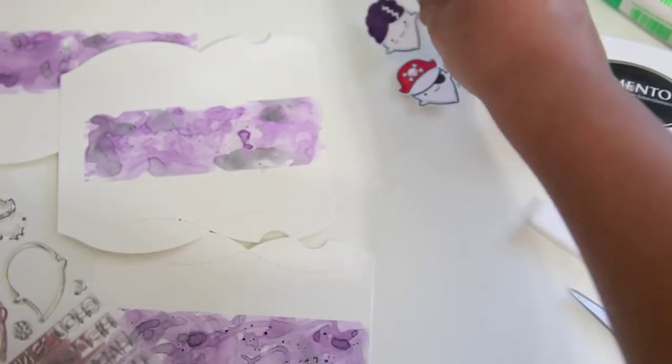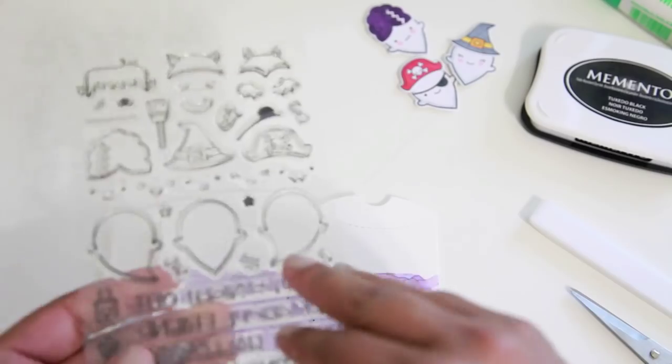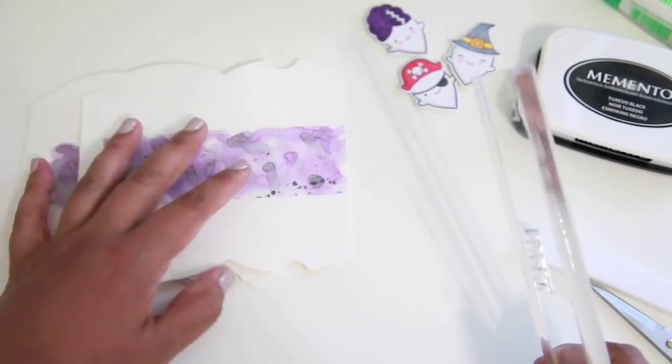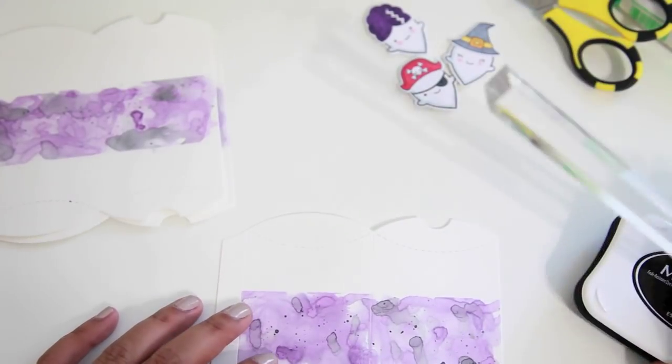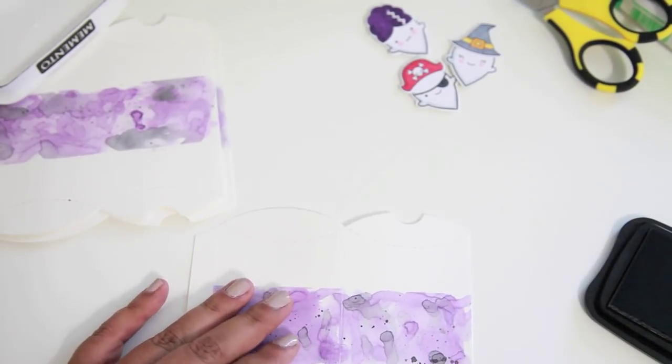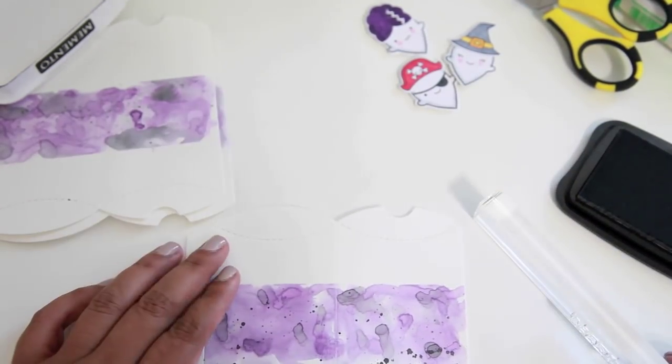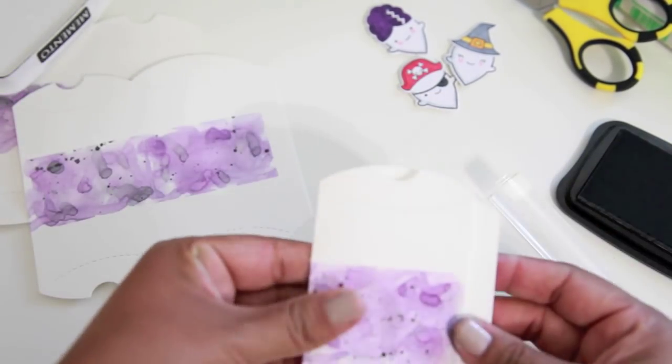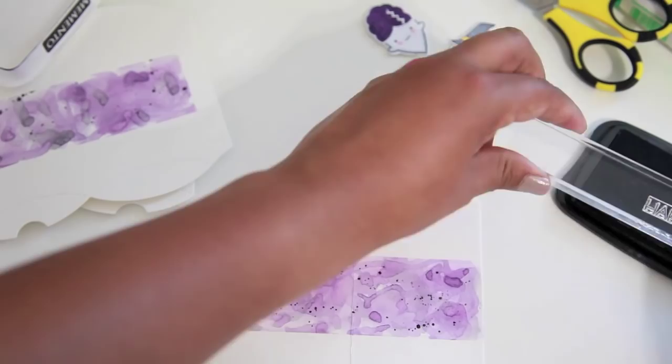But there's so many different sentiments in this set that you could use or you could use an alphabet set to create a custom sentiment or something like that. But for now I'm just going to go ahead and use Happy Halloween. I'm going to be stamping that in some black Memento Tuxedo Black ink.